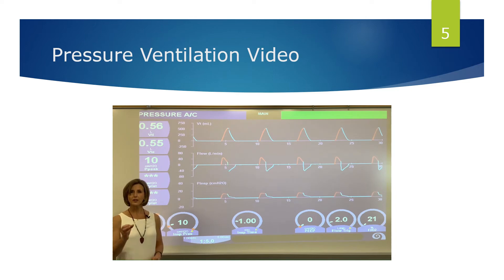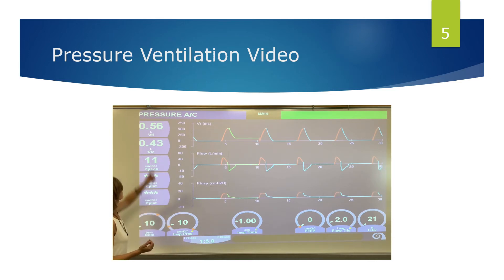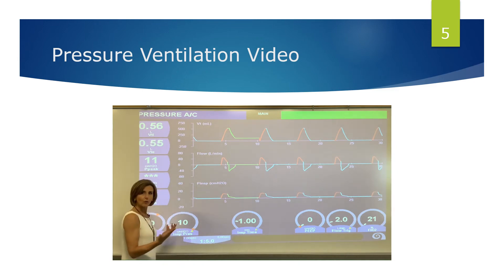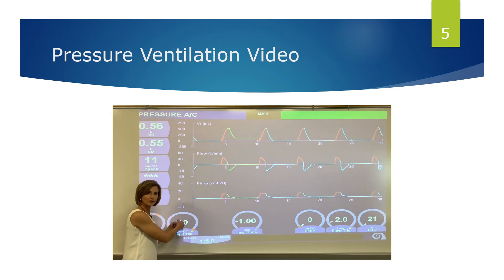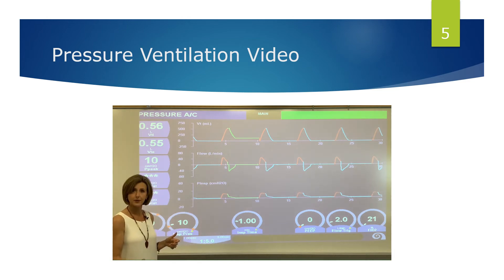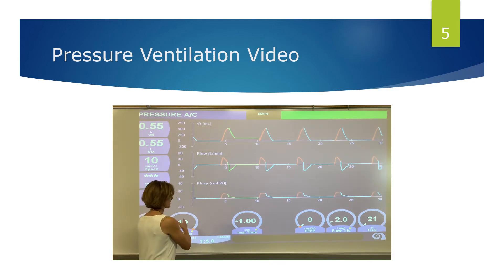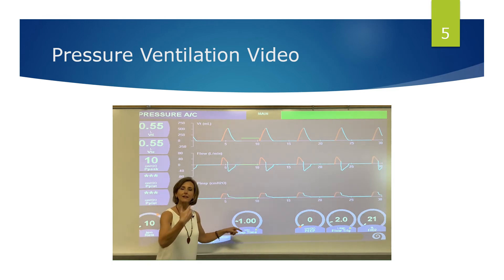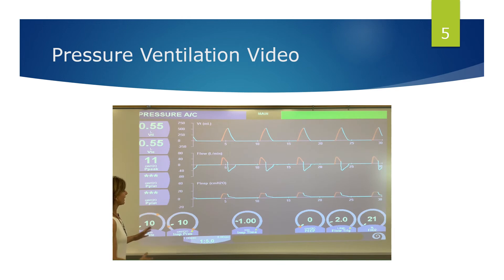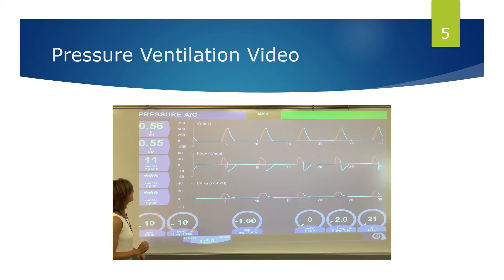In this video we're going to demonstrate pressure ventilation. The machine is in pressure assist control mode. The circles at the bottom are where I've set my settings: a rate of 10 and a set inspiratory pressure — in pressure ventilation we set the PIP and it won't change. I have a peak pressure set of 10, and I'm going to hold that pressure in the lungs for one second and then allow the patient to exhale.